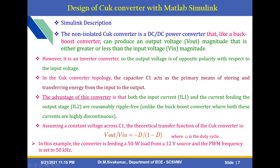The main advantage of this converter is that both the input current IL1 and the current feeding the output stage IL2 are reasonably ripple-free. Unlike the buck-boost converter, where both these currents are highly discontinuous. Assuming a constant voltage across C1, the theoretical transfer function of the Ćuk converter is: Vout / Vin = −D / (1 − D), where D denotes the duty cycle.